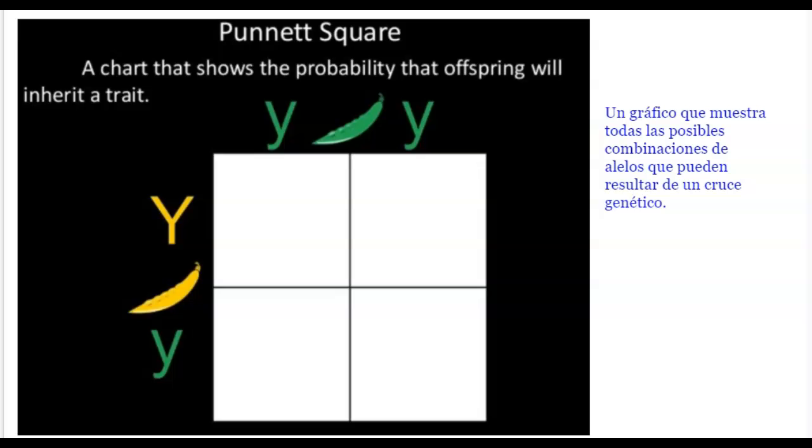A Punnett square. This is a chart that shows the probability that offspring will inherit a trait. Here we have green peas, chicharrones azules. No, verdes. And here we have yellow peas, chicharrones amarillos. Together, what do they make?